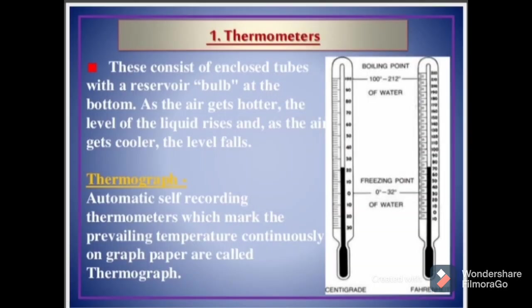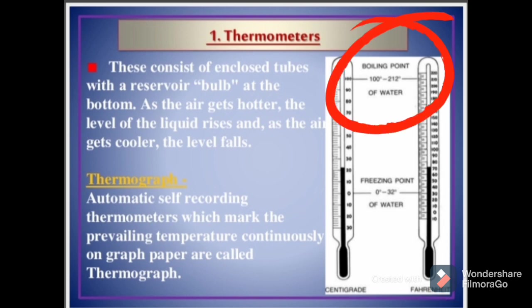Thermometers consist of enclosed tubes with a reservoir bulb at the bottom. As the air gets hotter, the level of the liquid rises, and as the air gets cooler, the level falls. A thermograph is an automatic self-recording thermometer which marks the prevailing temperature continuously on graph paper. Aside from centigrade, we also use Fahrenheit.